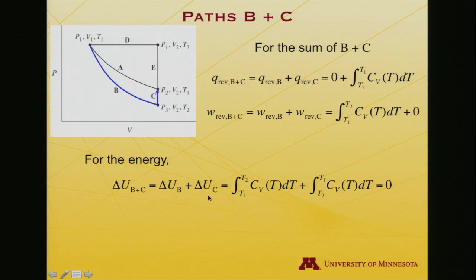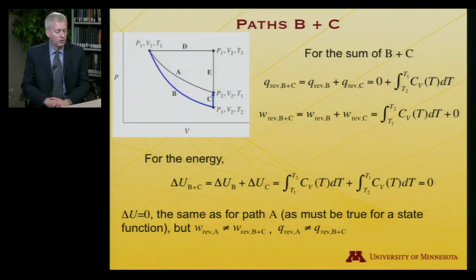So what's the energy change? Well, it's energy change for B plus energy change for C. That's the integral from T1 to T2 of the heat capacity plus the integral from T2 to T1. But when you reverse the limits on a definite integral, you just change the sign of the integral. So the sum of these two is zero, as it must be. Energy is a state function, and it only depends on T for an ideal gas. And since the destination temperature and the point of departure temperature are the same, the energy change is zero.